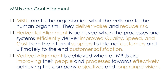Here are some points to take home. MBUs are to the organisation what cells are to the human organism — they deliver value and reduce risk. Horizontal alignment is achieved when the processes and systems efficiently deliver improved quality, speed, and cost from internal suppliers to internal customers and ultimately to end customer satisfaction. Vertical alignment is achieved when all MBUs are improving their people and processes toward effectively achieving the company objectives and long-range vision.